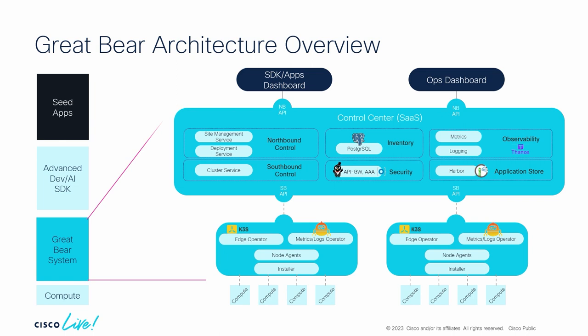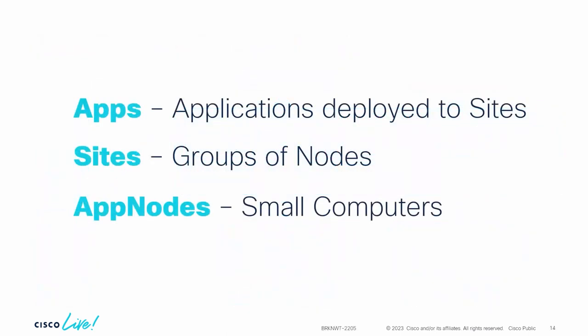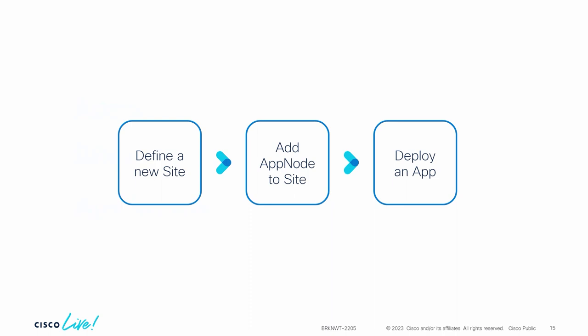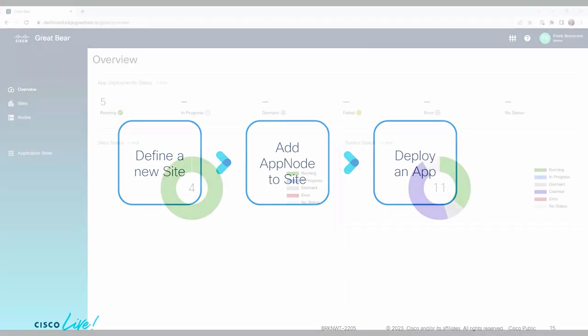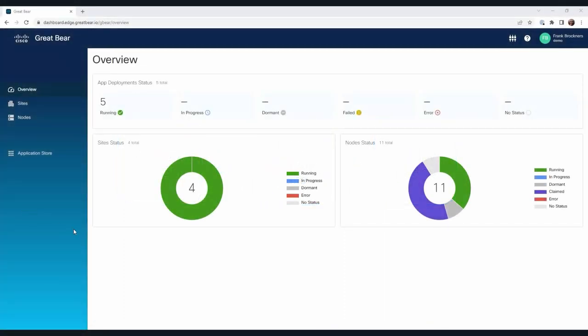Northbound, you have an API. Everything is API-driven, and you can bolt on your operational solutions like AppDynamics or Grafana. We also have a dashboard. Let me show you a short video of a deployment of a simple application. Sites are just clusters or groups of small computers. We're going to define a site, add a node to that site, and deploy the simplest application you can imagine — something like a simple echo or ping.